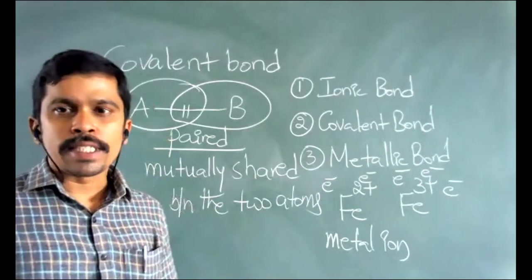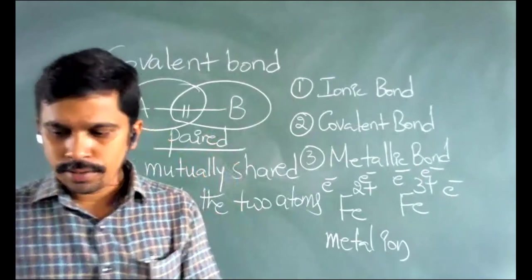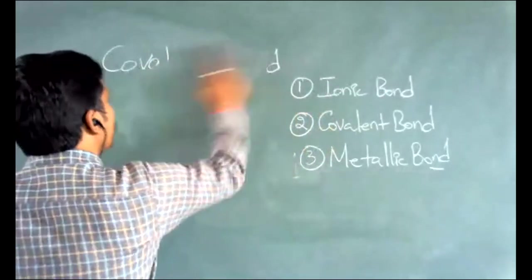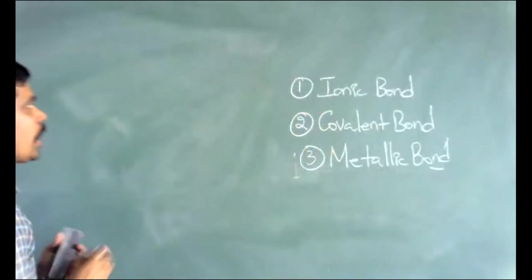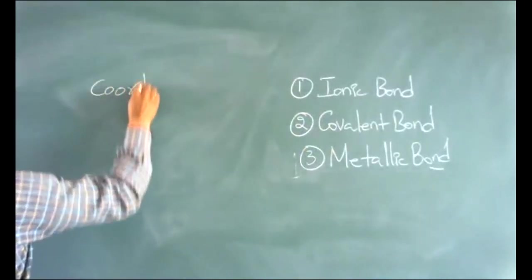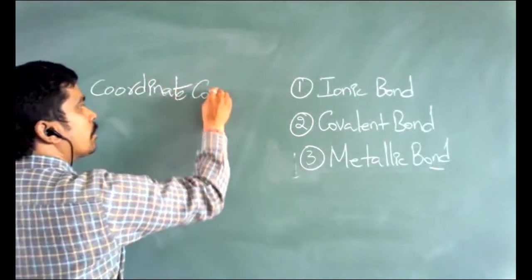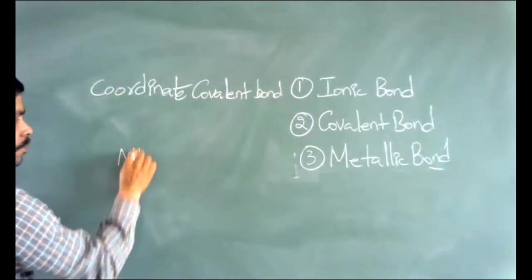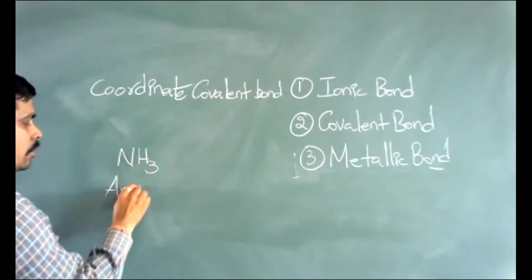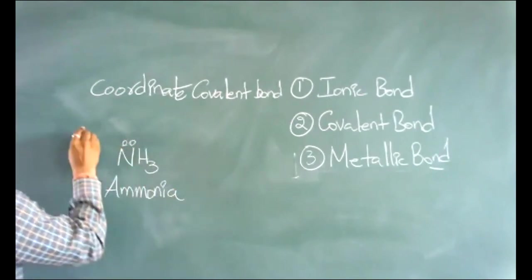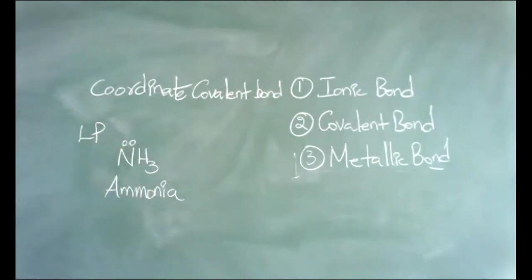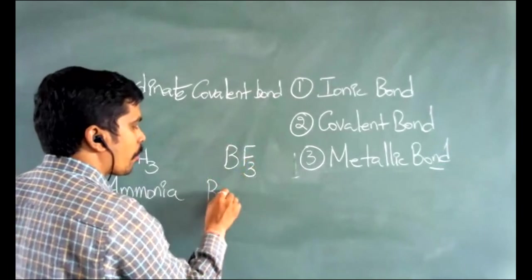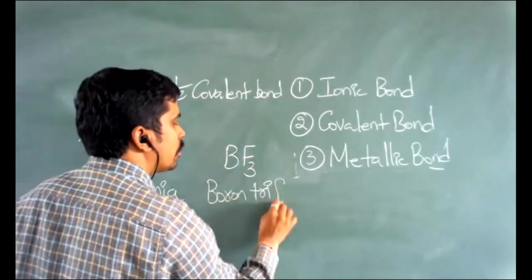You said chemical bonds are classified into three types, and the third one is coordinate covalent bond. What is meant by coordinate covalent bond? It is also a covalent bond, but a special type. For example, taking ammonia, NH3 — nitrogen contains one lone pair. And BF3, boron trifluoride, where boron is bonded to three fluorine atoms by single bonds.